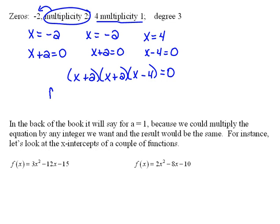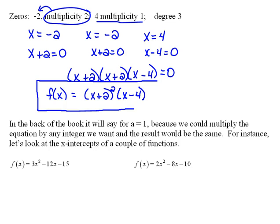Just like before, since this is a function, let's write it using function notation. And when we multiply something by itself, we can write that more compactly as squared. So f of x equals x plus 2 squared times x minus 4. This is the polynomial with those zeros. Notice that the square here also tells us the multiplicity — it means that zero happens that many times. That is the multiplicity.